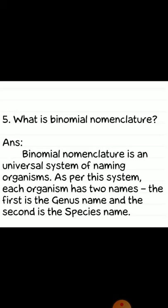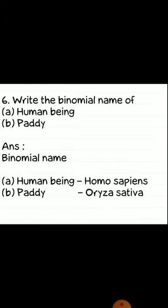Fifth question: what is binomial nomenclature? Answer: binomial nomenclature is a universal system of naming organisms. As per this system, each organism has two names — the first name is the genus name and the second name is the species name.